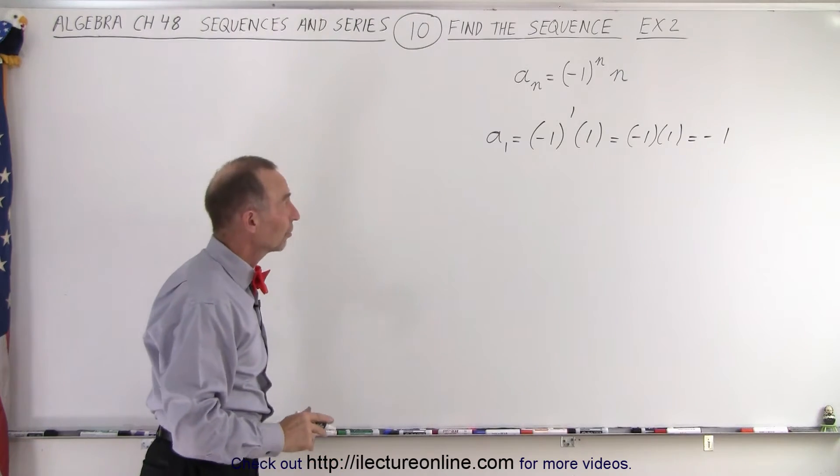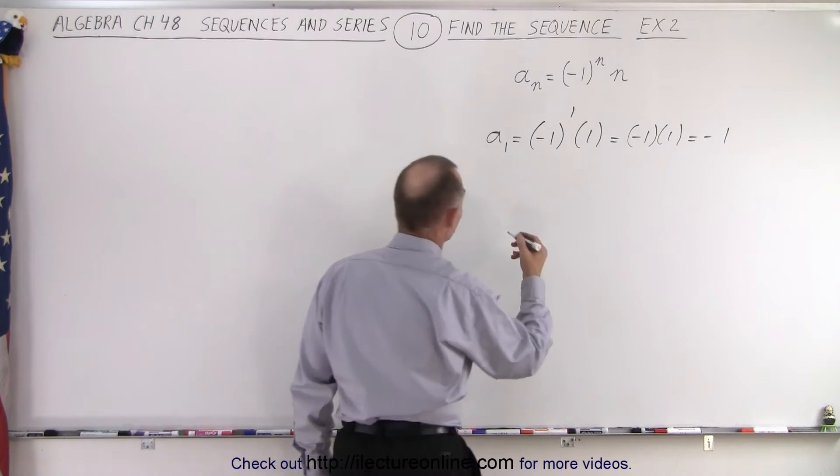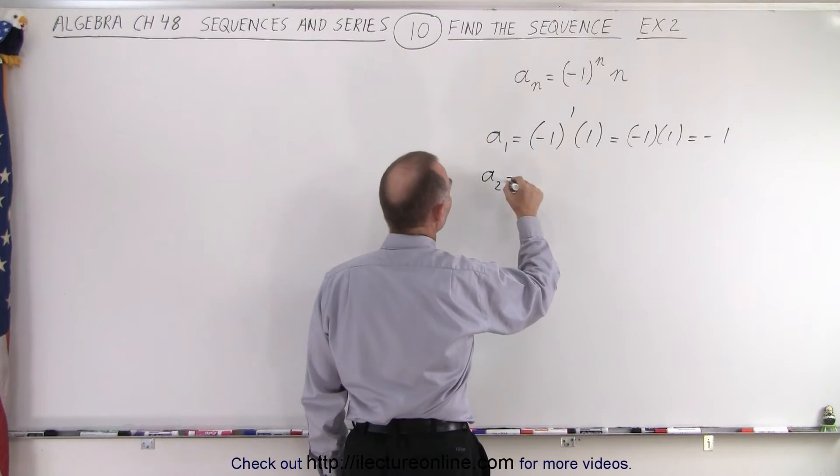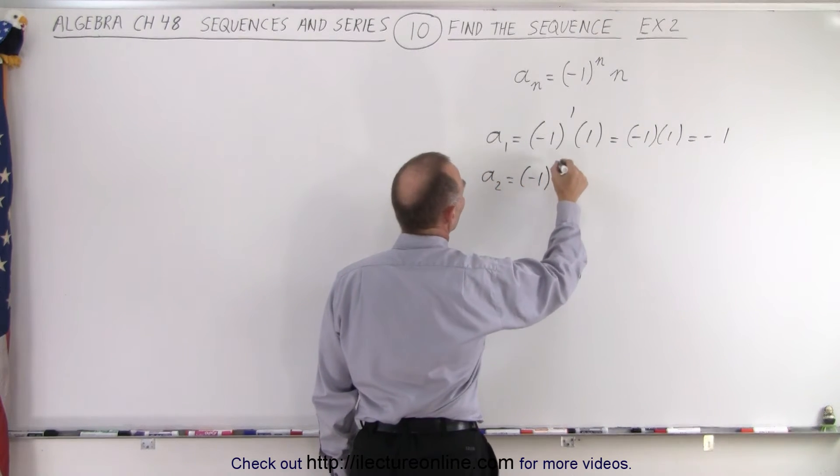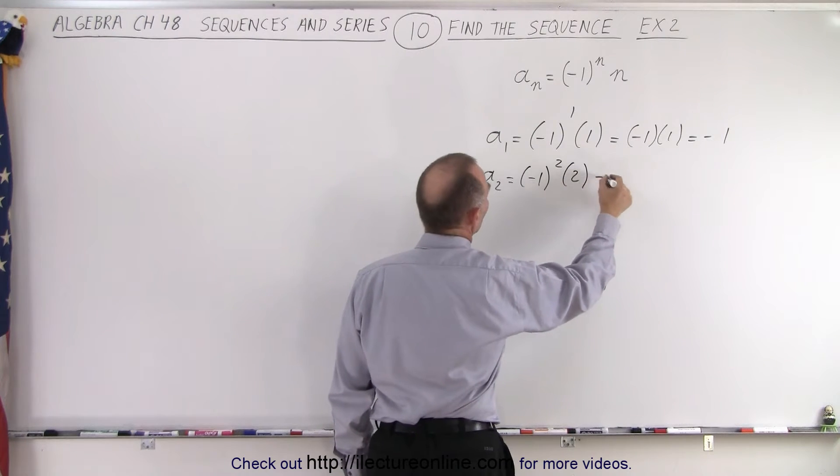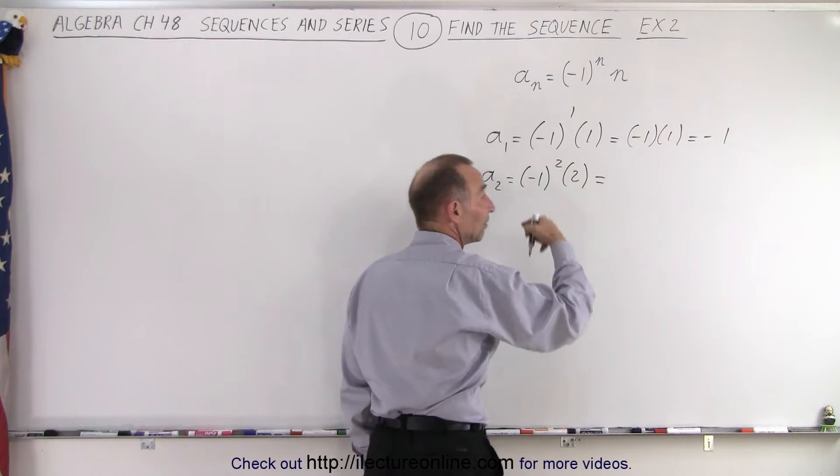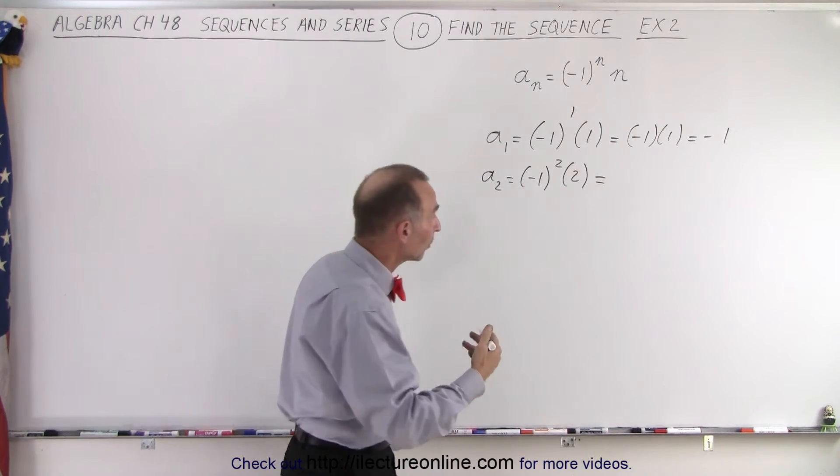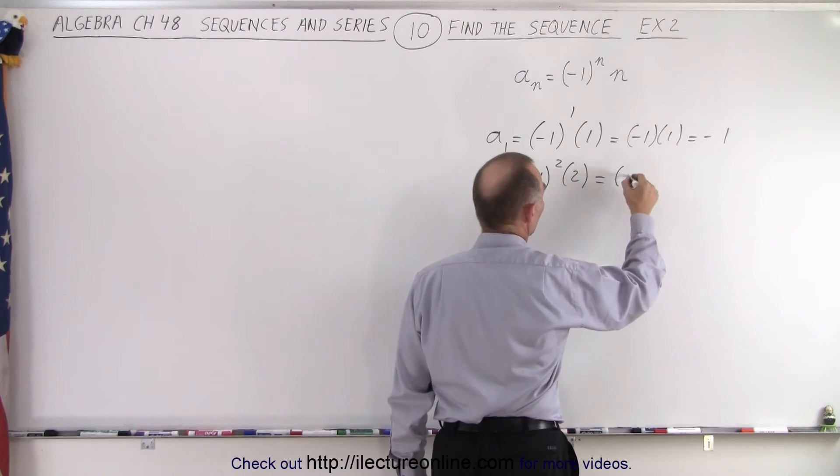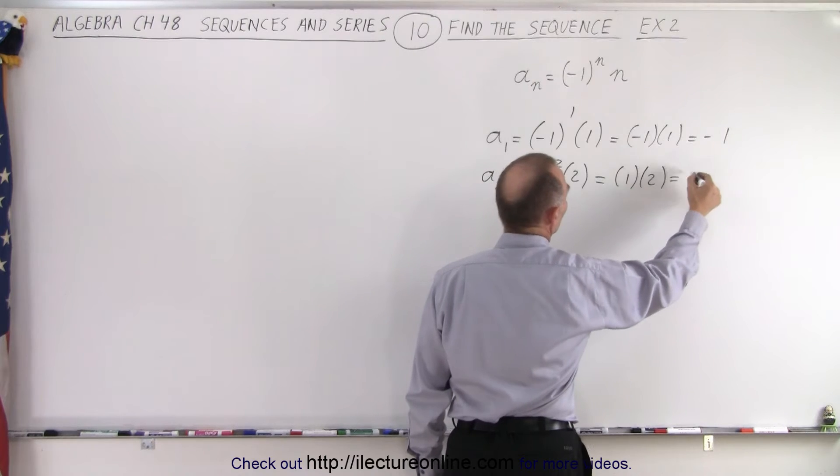A sub 2 is equal to negative one to the second power times two. Of course, when we take a negative number and we square it, we raise it to an even exponent, that becomes a positive number. So this is positive one times two, which is two.